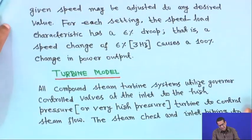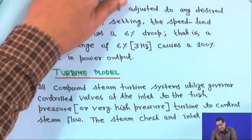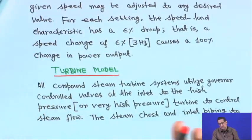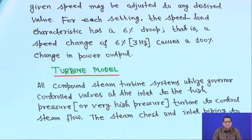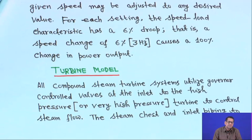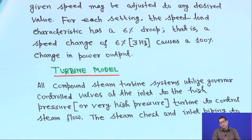For completeness of the total block diagram representation, we will now take the turbine model — specifically a reheat type turbine. After the turbine model, we will cover the generator model. So the next topic is the turbine model, followed by the generator model.